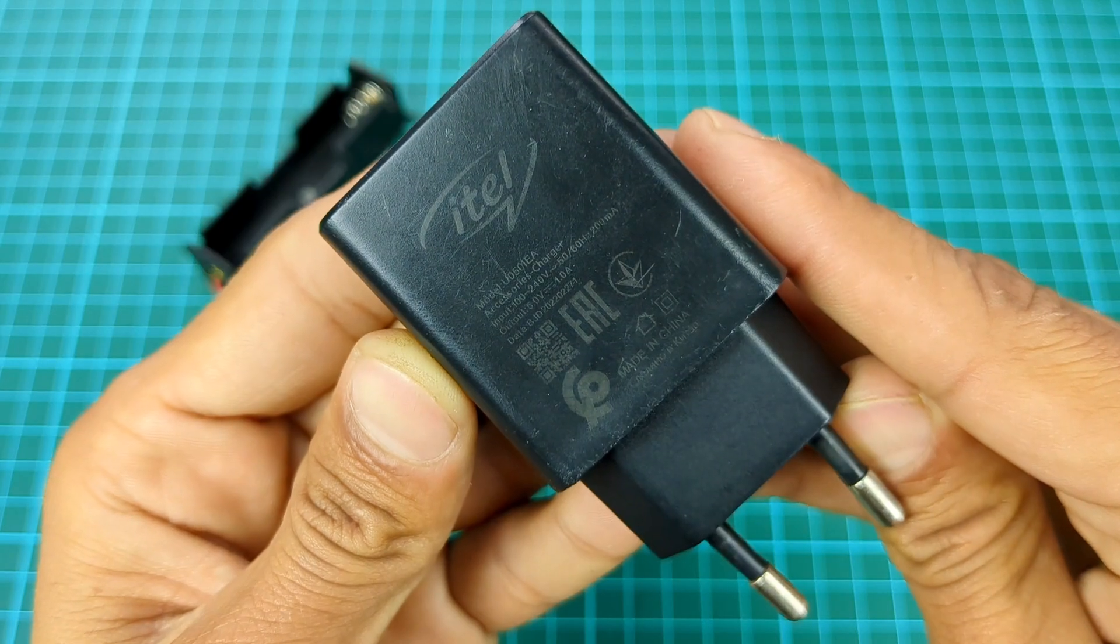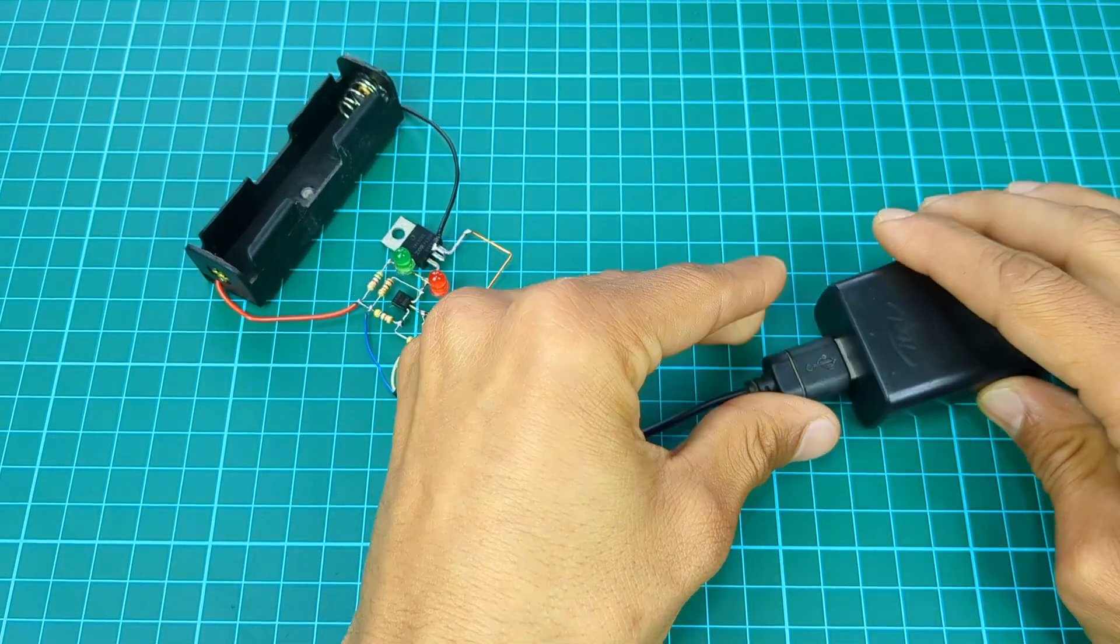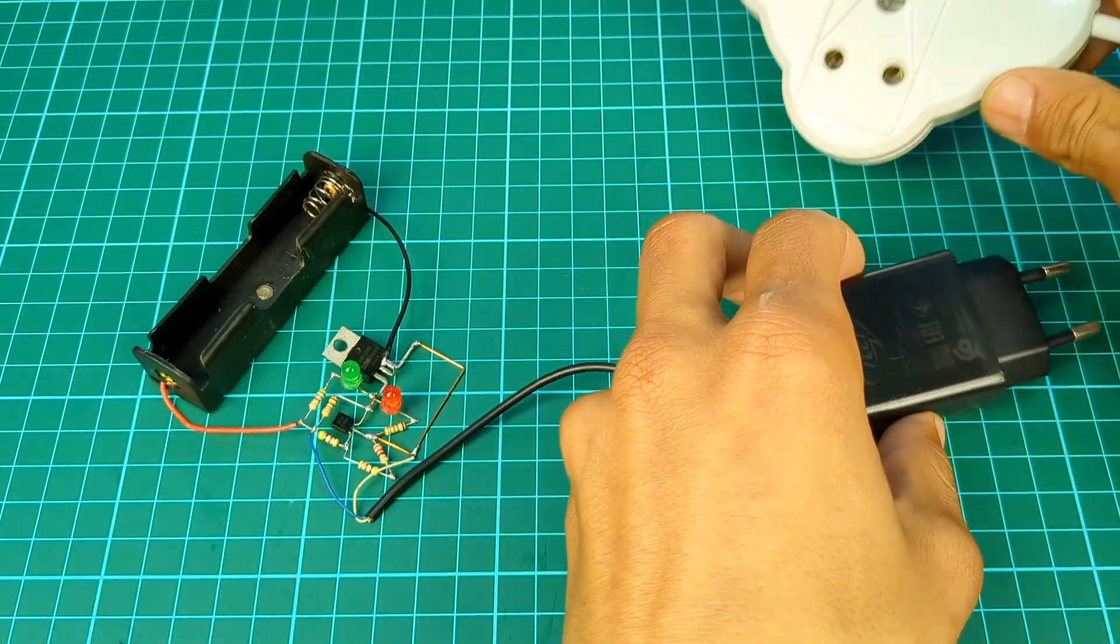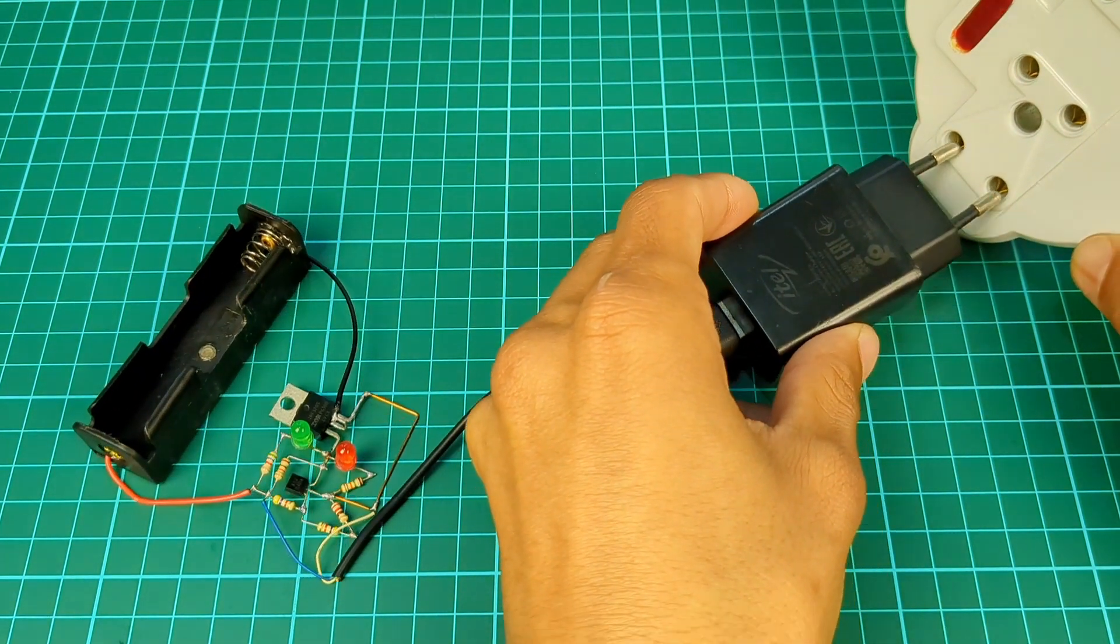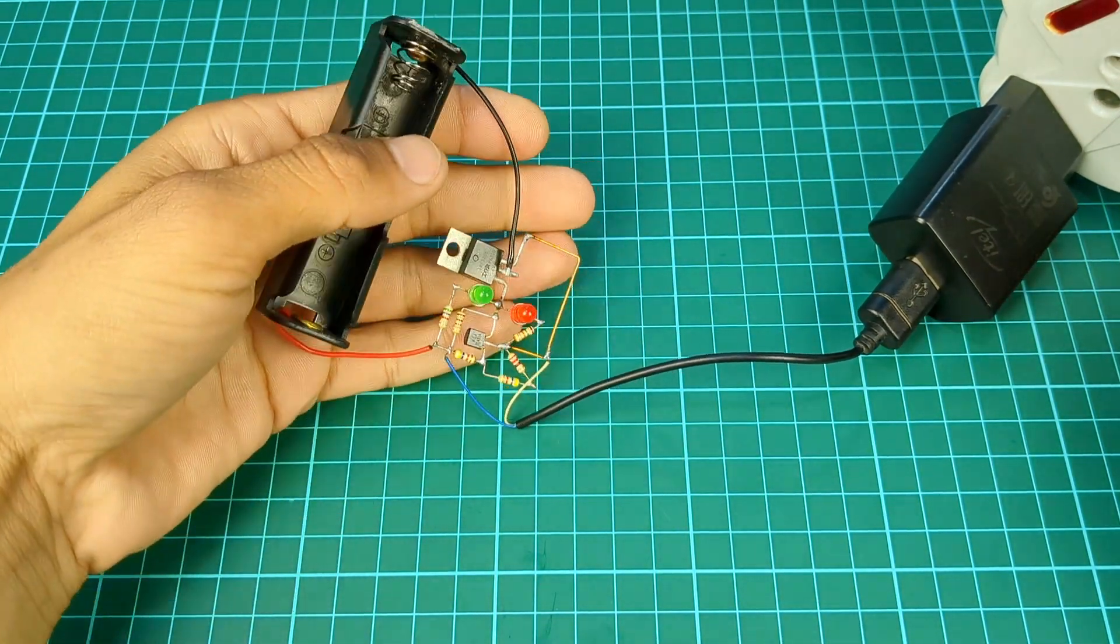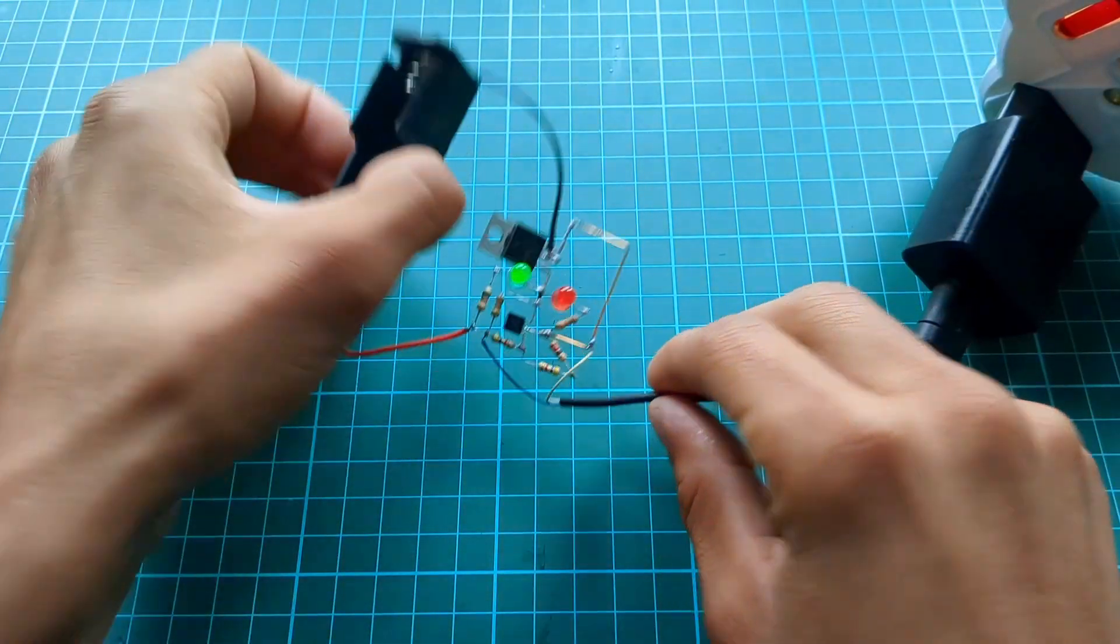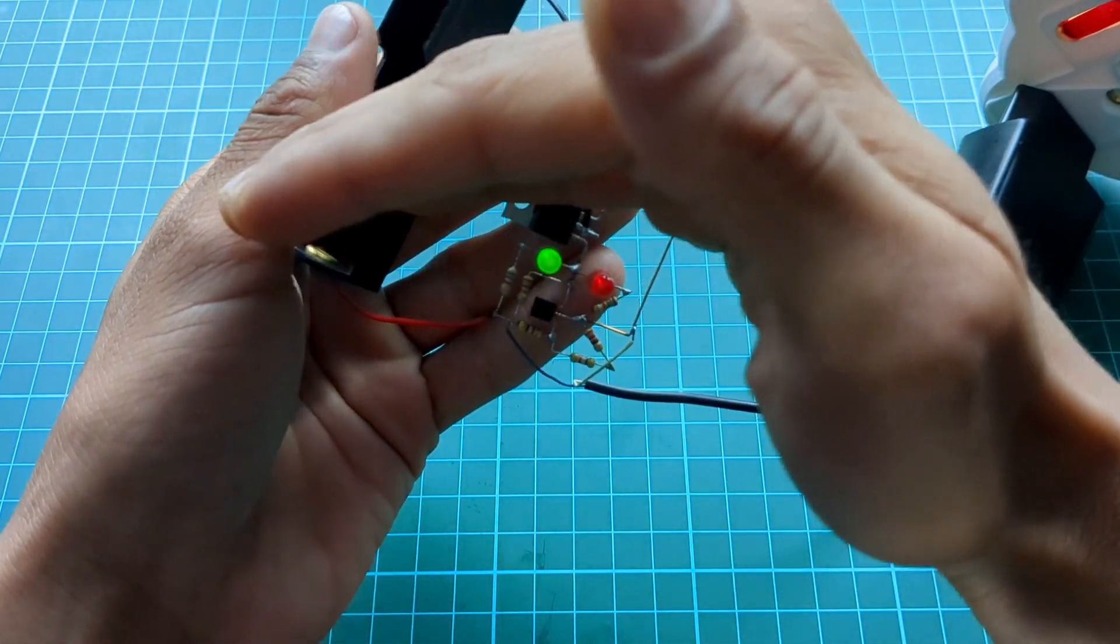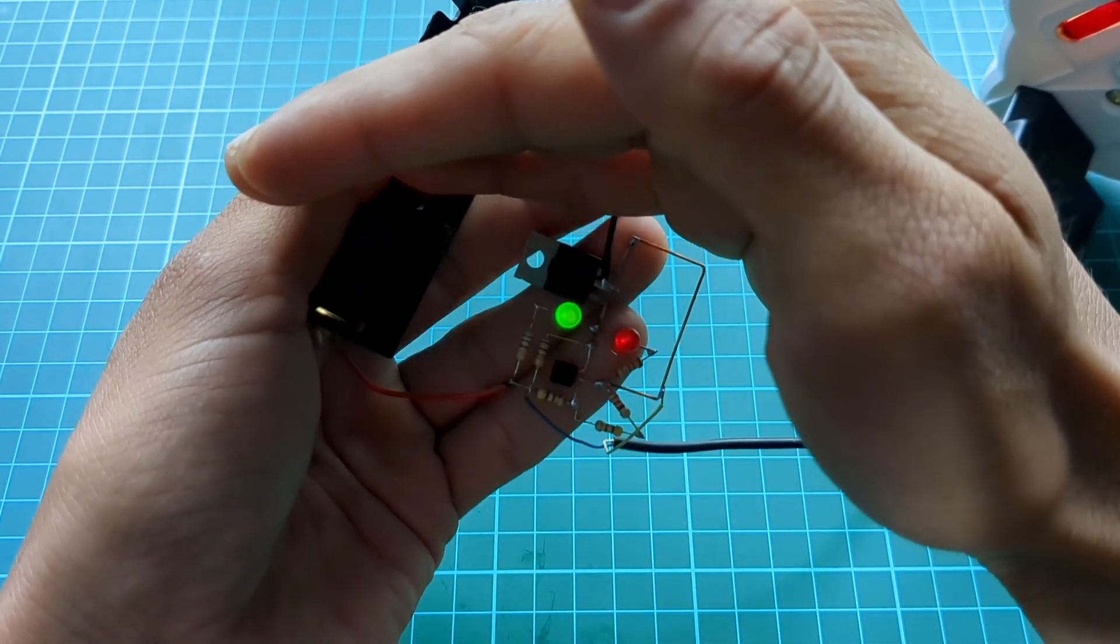Here I'm using 5 volts mobile charger. Here green LED indicates circuit is on but battery is not connected.